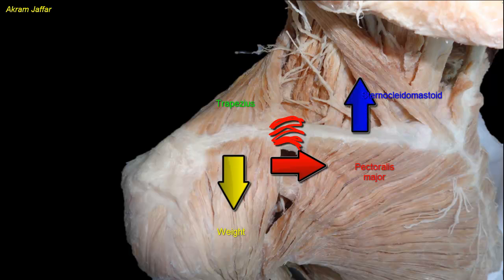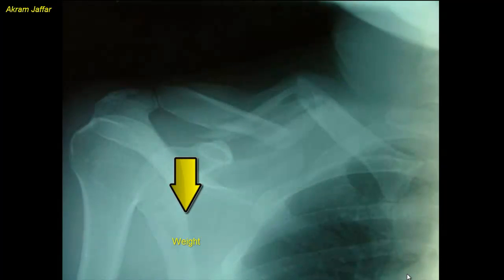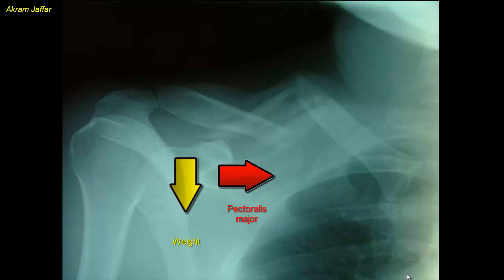Sternocleidomastoid elevates the medial fragment. Here we can see the fracture site, typically between the middle and lateral thirds. The lateral fragment is pulled downwards by the weight of the limb and pulled medially by pectoralis major, so it is overlapped by the medial fragment, which is at the same time pulled upwards by sternocleidomastoid.